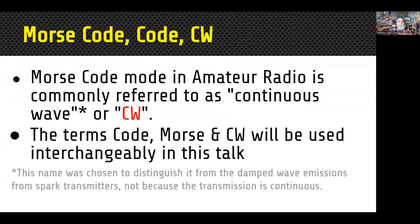Morse code, CW — they all refer to the same thing, and actually there are multiple Morse codes. There's American, International, et cetera. We're going to talk about the International Morse code used in amateur radio tonight, not the American code used in telegraphy. CW stands for continuous wave, which doesn't mean the signal is on constantly. It distinguishes it from dampened wave emissions from spark transmissions. CW replaced spark very early in amateur radio history, and if you ever try to listen to spark and decode Morse code versus CW, you'll be thankful for CW.